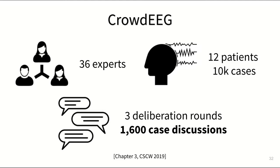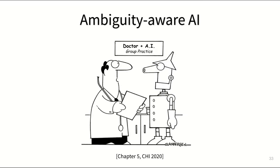We used this data to analyze the reasons why disagreements arose and why some persisted despite deliberation. But in the interest of time, I'll skip the details of this observational study and instead tell you more about how we used a small part of this dataset to simulate an ambiguity-aware AI assistant.